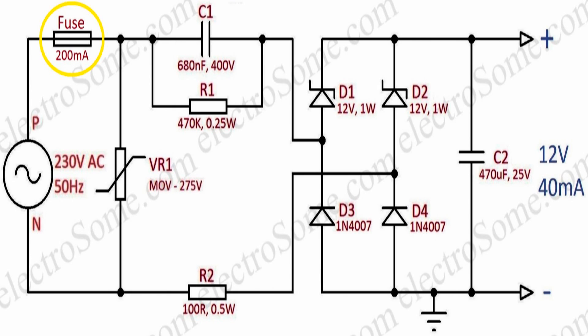The 200mA fuse will protect the circuit from overcurrent from mains due to any reason. MOV is the abbreviation of metal oxide varistor. It will protect the circuit from mains voltage spikes and surges. As we are using 275V MOV, when the voltage becomes greater than 275V, it will start conducting to cancel the effect of excess voltage.